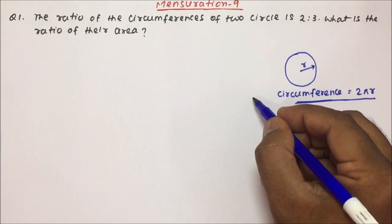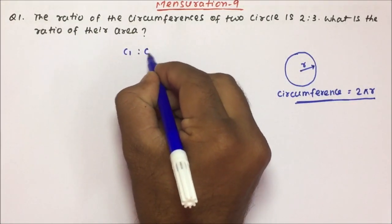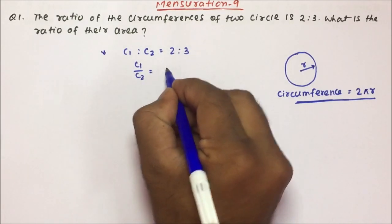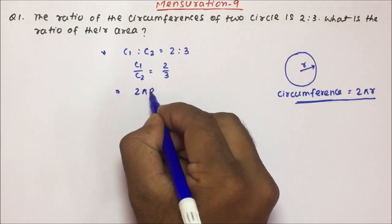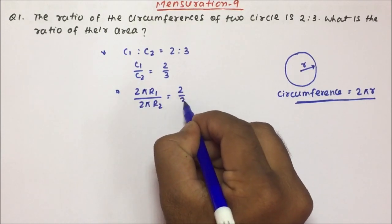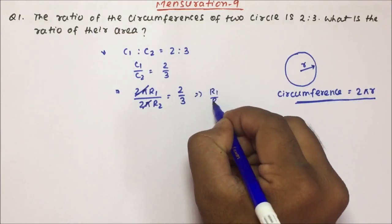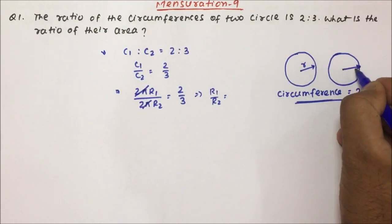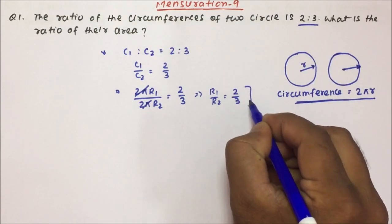So you have to find out the ratio of their areas. The circumference ratio is given as 2 is to 3, so C1 by C2 equals 2 by 3. Circumference will be equal to 2π R1 and 2π R2, equal to 2 by 3. Now, 2π and 2π will get cancelled, so we get the radius of both the circles. There are two circles, and the circumference ratio is 2 is to 3, so the radius ratio is also 2 by 3.